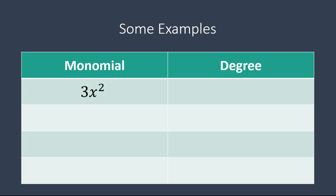Here is a table with monomials on the left and the degrees on the right. This monomial has the value of 3x squared. You are looking at the exponent 2, so the exponent is 2 — that's the degree of this monomial. Let's look at another one: 2y to the power of 5. What is the degree? The exponent value is the degree, so it's 5.